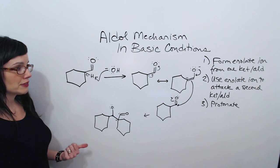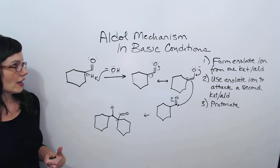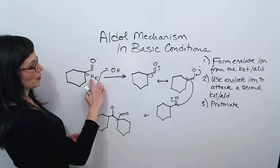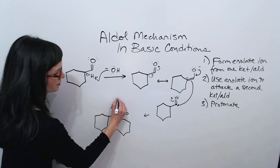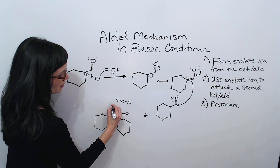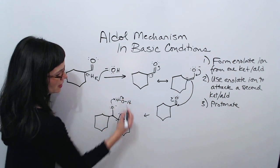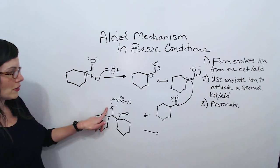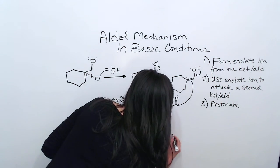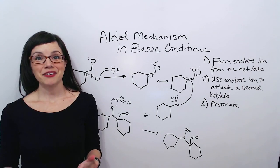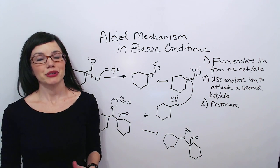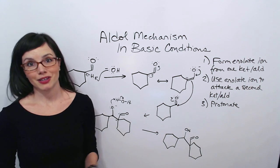Now our final step is just protonation. What are we going to use to protonate? This protonated base, which is now water. I'm just going to let this O go out and grab that H, and our final product is just going to look like this but with an OH group. Now that we've covered these mechanisms, let's just focus on predicting products without going through this long process.